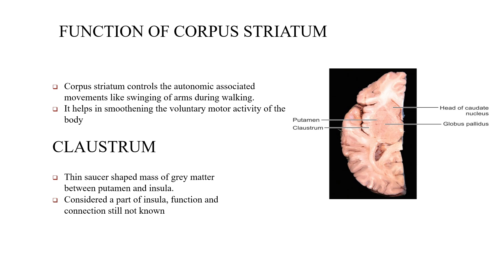The functions of the corpus striatum: it controls autonomic associated movements like swinging of the arms during walking and helps in smoothening voluntary motor activity of the body. The claustrum is a thin saucer-shaped mass of grey matter situated between the putamen and the insula. It is considered part of the insula, and its functions and connections are still not fully known.